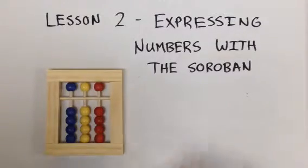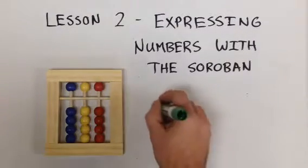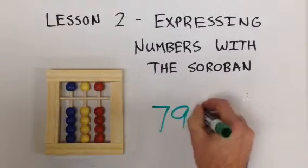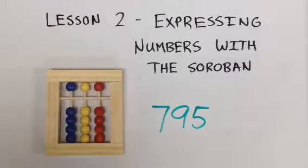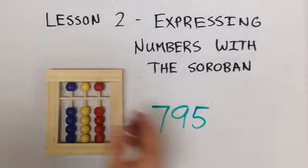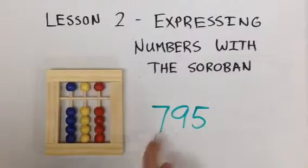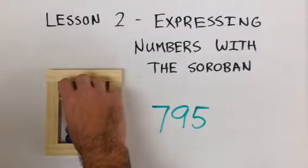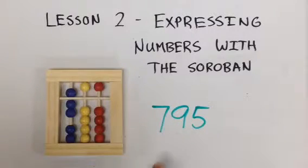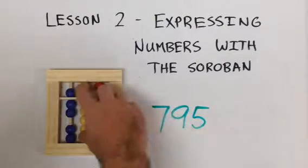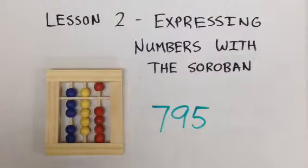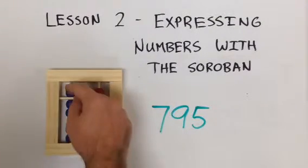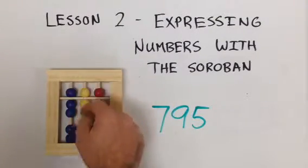And the last number: do the number 795. Starting left to right, we go to our blue column — we have seven 100s, that is 700. We have nine 10s, that gives us 790. We have five 1s. This is the number 795.